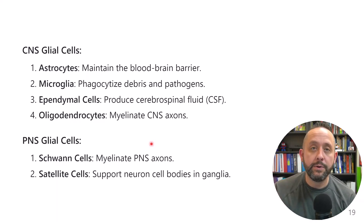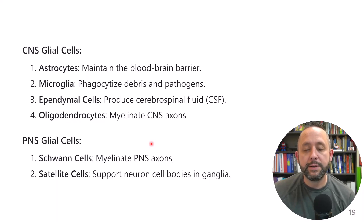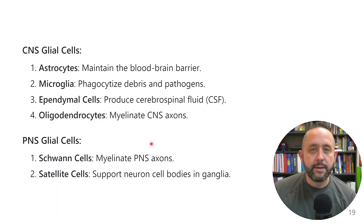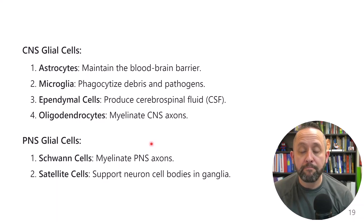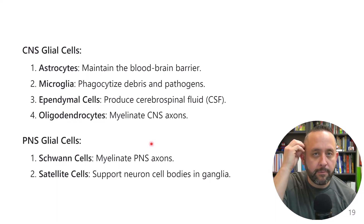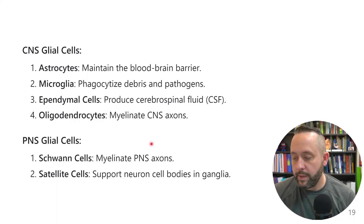One example from my time in the neurosurgery clinic: some patients had hearing loss and were diagnosed with a schwannoma — a tumor of the Schwann cells, hence the suffix '-oma.' That would be a peripheral nervous system tumor rather than a central nervous system tumor, but it's still located close to the brain. There are some important distinctions there that we should be able to make.